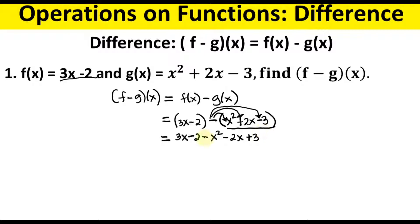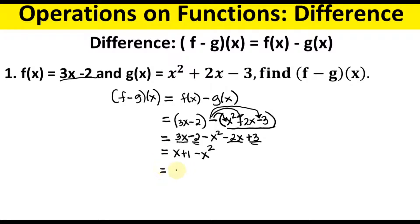For the third term, negative times negative 3 gives positive 3 — remember, negative times negative is always positive. Now combine like terms: 3x and negative 2x gives x; negative 2 and positive 3 gives positive 1. Arrange by highest exponent: the final answer is negative x squared plus x plus 1.